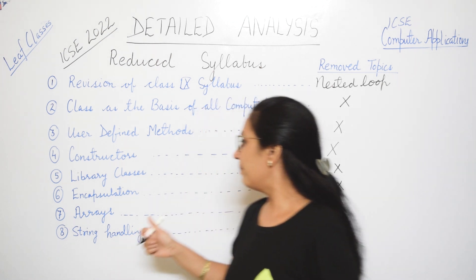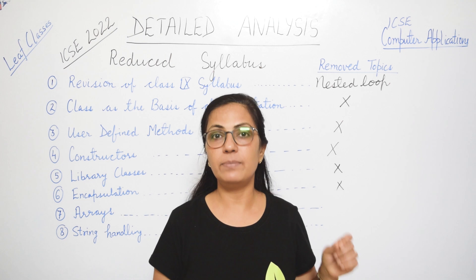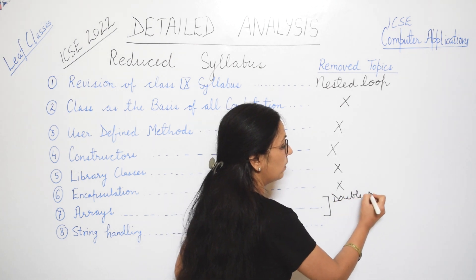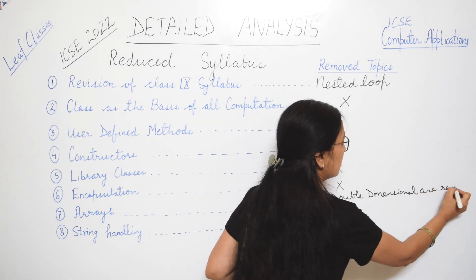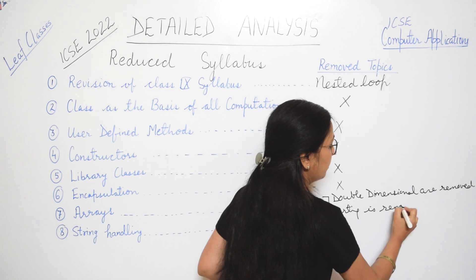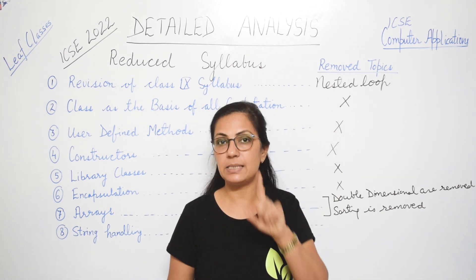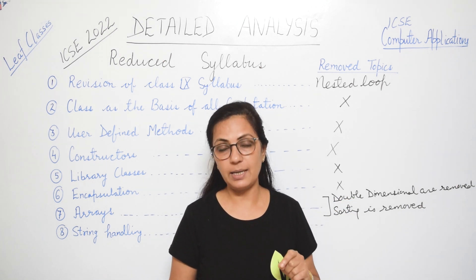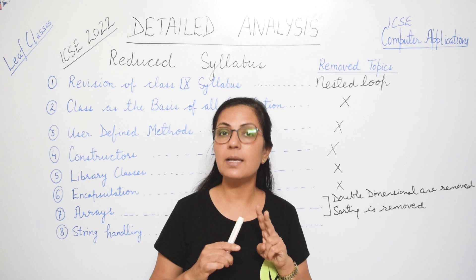The major change is in Arrays. Double dimensional arrays are removed, and sorting is removed from this topic. One reason for the removal of nested loop could be that both these topics — double dimensional arrays and sorting — require nested looping. You still have both search techniques: linear search as well as binary search are present in arrays.